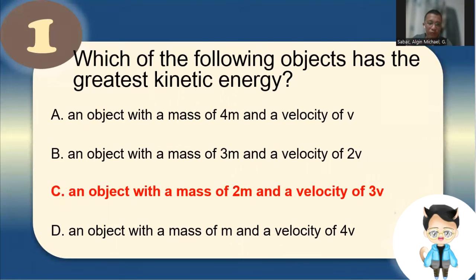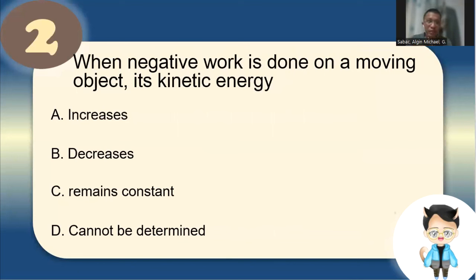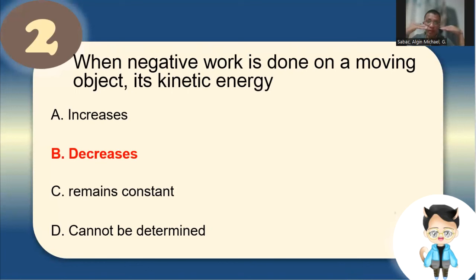Number 2: When negative work is done on a moving object, its kinetic energy — what will happen to it? Negative work means the object is slowing down. So its kinetic energy decreases. The answer is letter B: decreases.